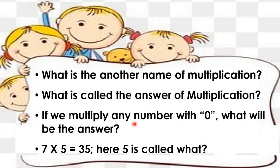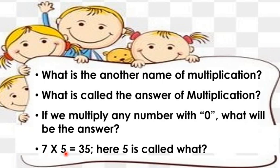If we multiply any number with zero, what will be the result? Yes, the answer will be zero. Now look at this mathematical sentence: here 7 is multiplied by 5, so the result is 35. Here, 5 is called the multiplier and 7 is called the multiplicand. Why is 5 the multiplier? Because 5 is the number by which 7 is multiplied.